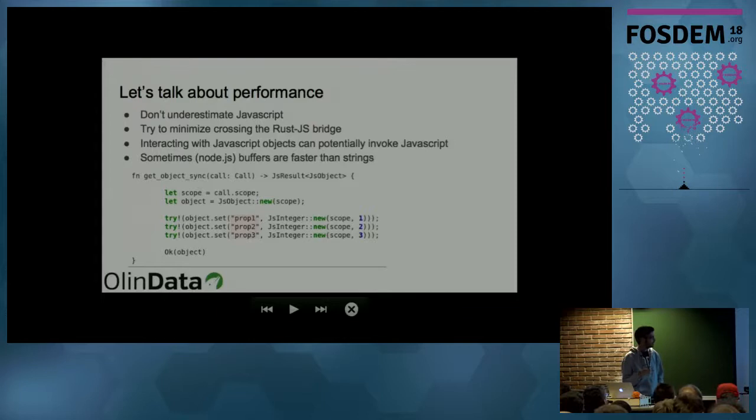So same thing goes with interacting JavaScript objects from Rust. So in this example, you can see that we create a new JavaScript object, and then we try to set three properties. And this potentially might call the JavaScript code from the Rust, because in JavaScript you can set setters on objects. And this will also be expensive. In fact, I would say for setting properties in objects as much as you can, try to do it in JavaScript code, because V8 will optimize your code, but this is not optimized code anymore.